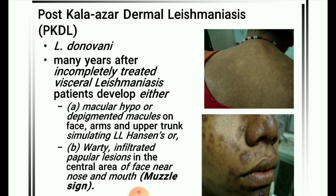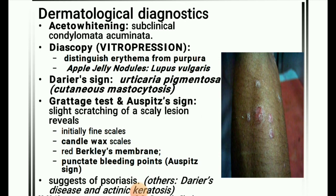Next image: Post-kala-azar dermal leishmaniasis (PKDL). Causative agent is Leishmania donovani. Many years after incompletely treated visceral leishmaniasis, patients develop either macular hypopigmented or depigmented macules on the face, arms, and upper trunk, simulating leprosy (Hansen's disease), or warty infiltrated papule lesions in the central area of the face near the nose and mouth — the muscle sign.